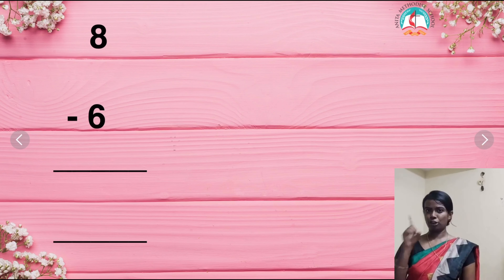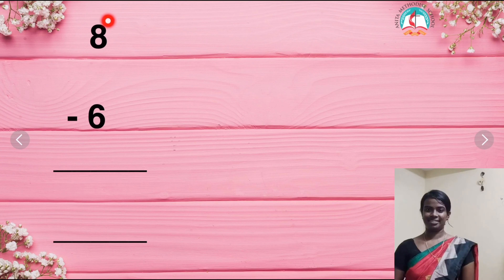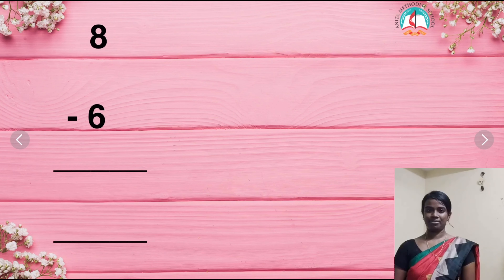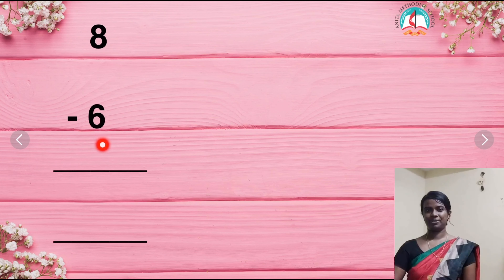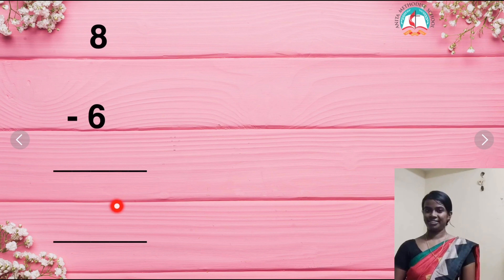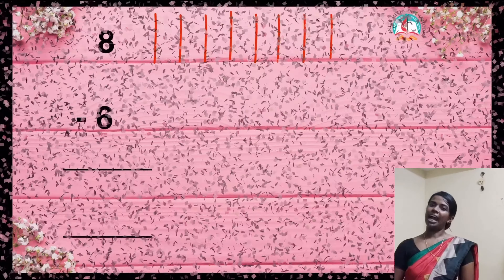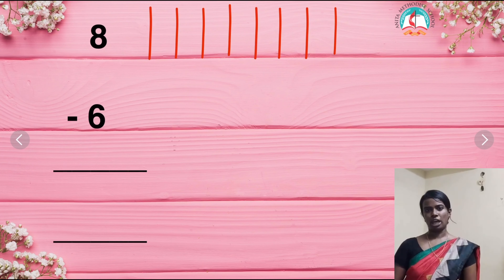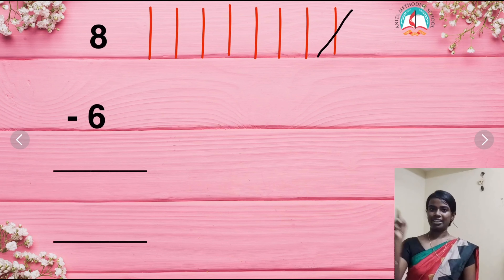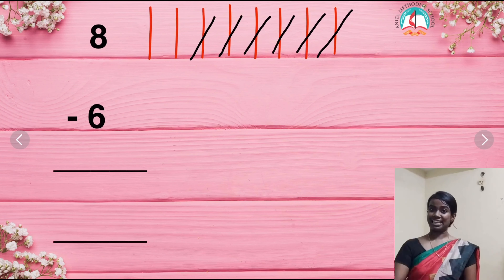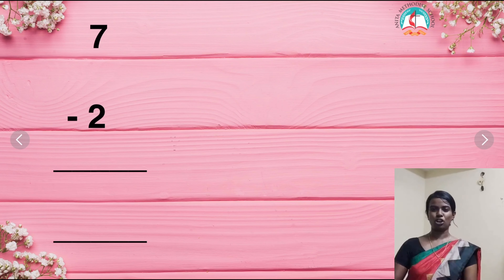Now you are going to draw lines for the first number. Look at the first number, draw lines for it. Count carefully and draw the lines. Then look at the second number and strike out the lines. Count the remaining lines and write it down. 1, 2, 3, 4, 5 and 6. How many are left? Only 2. Did you write the answer 2? Very good children. Super, good job.